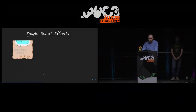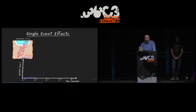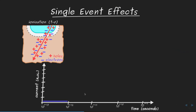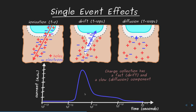To understand the origin of soft errors: a typical transistor is built from diffusions, gate, and channel. When a particle passes through and deposits charge near a drain diffusion, it creates free electron-hole pairs. In the presence of an electric field these are collected by drift, resulting in a large, very short current spike; the remaining charge is collected more slowly by diffusion, producing a smaller-amplitude event.